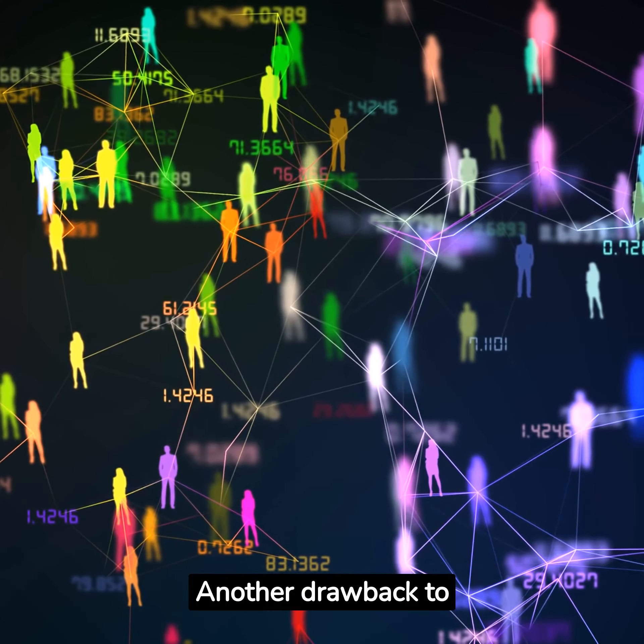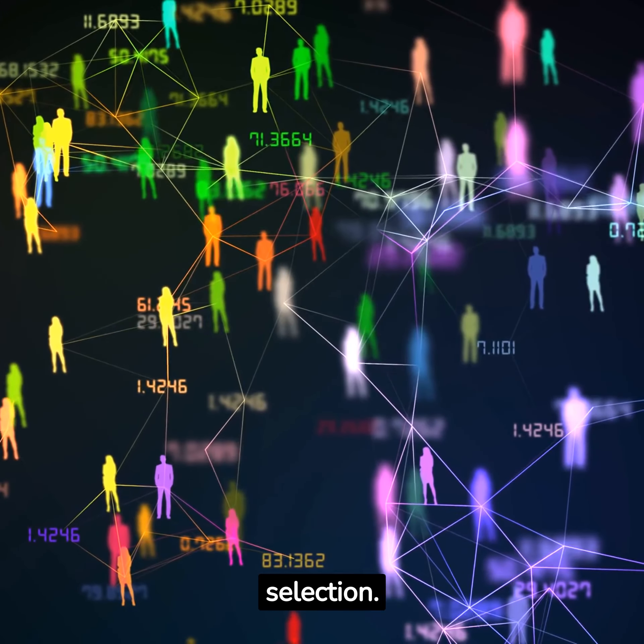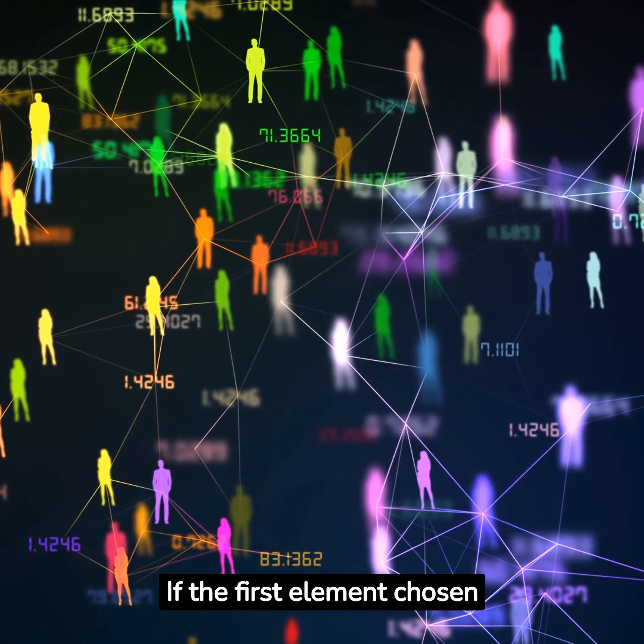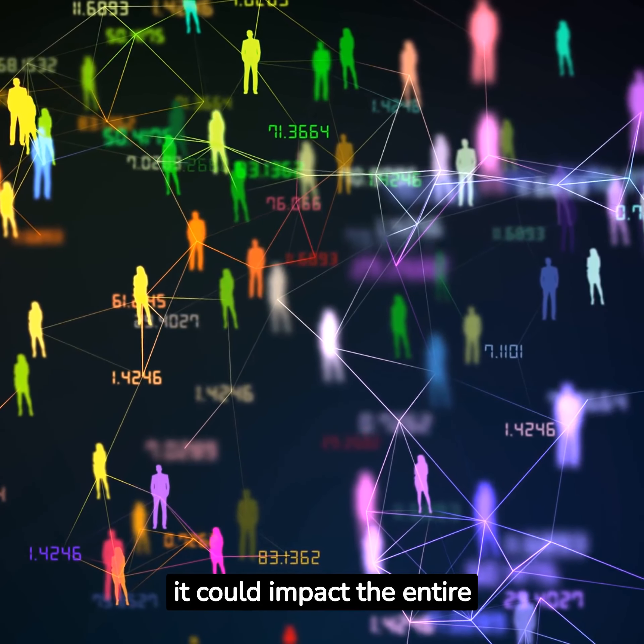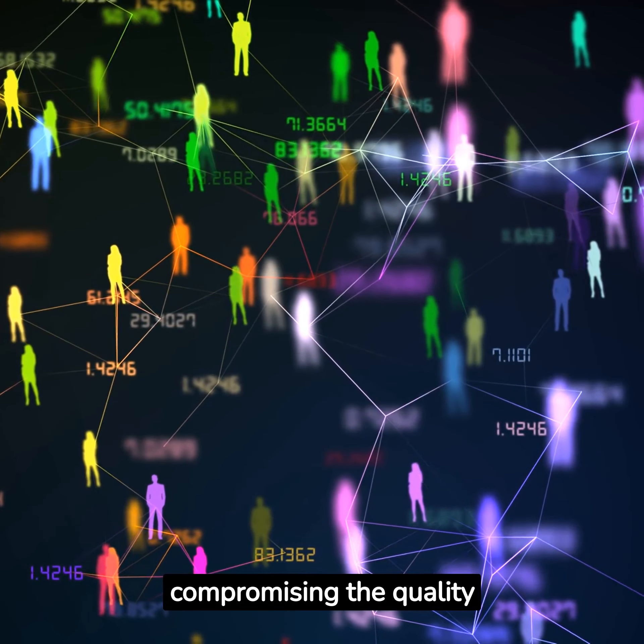Another drawback to Systematic Sampling is its dependence on the initial random selection. If the first element chosen is not truly random, it could impact the entire sample's representativeness, compromising the quality of the research.